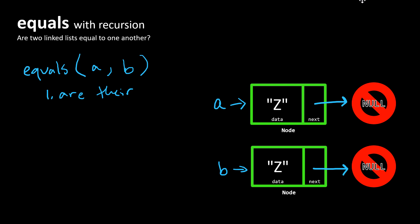And this is true in this case because both of the data properties are Z.